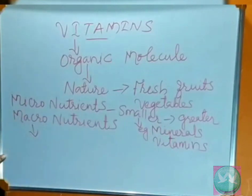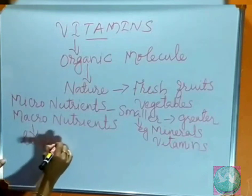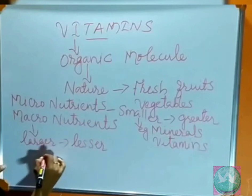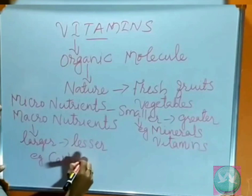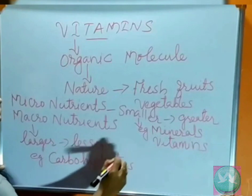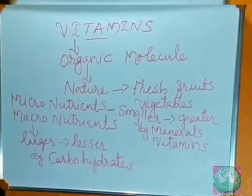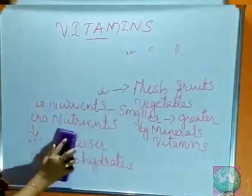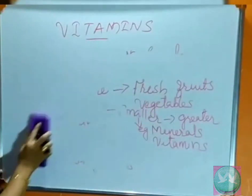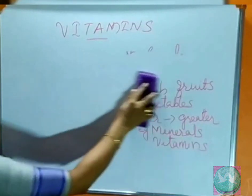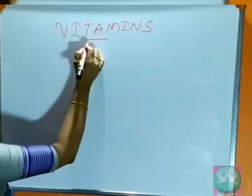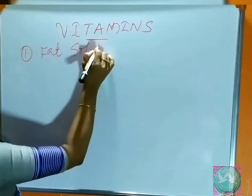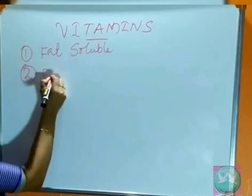Macronutrients need a larger quantity but their function is lesser in the body. And on the basis of solubility, we can classify vitamins again into two. First one is fat soluble and second one is water soluble.